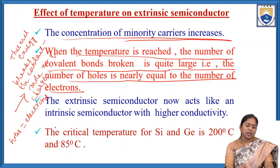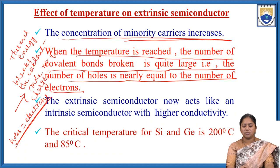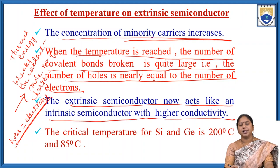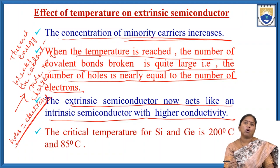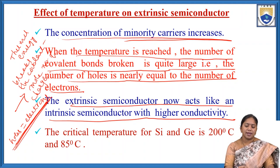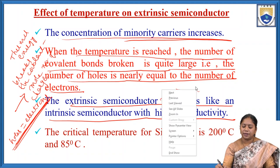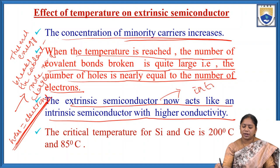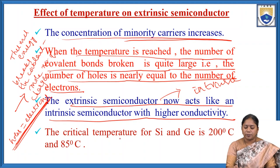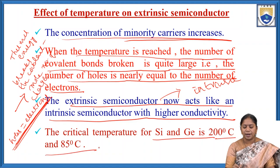Now the extrinsic semiconductor acts like an intrinsic semiconductor with higher conductivity. Due to the increasing minority charge carriers, the number of holes equals the number of electrons, and in this case the extrinsic semiconductor behaves as an intrinsic semiconductor. The critical temperature for silicon and germanium is approximately 200°C and 85°C respectively.